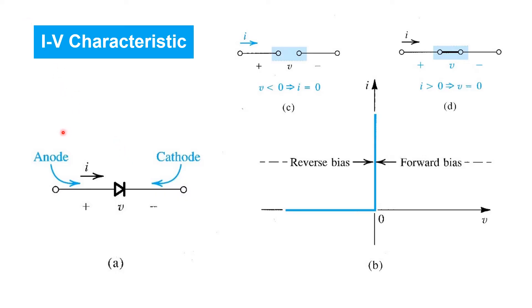The terminals are therefore given different names, anode on the left, cathode on the right. And we'll see that current can only flow from anode to cathode, as suggested by the arrowhead symbol. However, current cannot flow in the opposite direction.